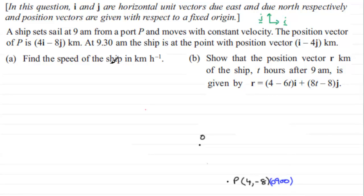Then we're told that at 9:30am the ship is at the point with position vector i minus 4j. So if we go one across four down, let's say we're at this point here. And that's the point, I'll call that point A say. And we'll say that's 1 minus 4 as far as coordinates go. And ship is there at 09:30am.